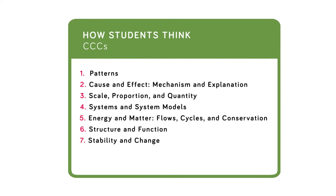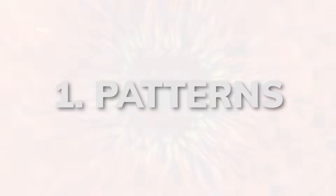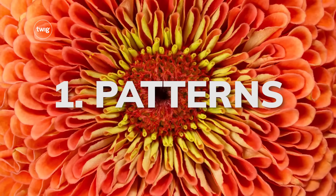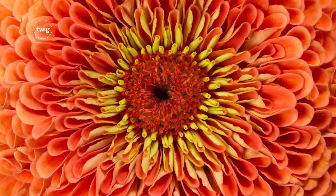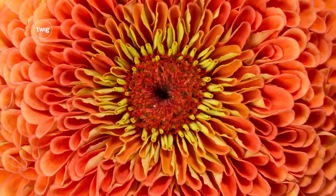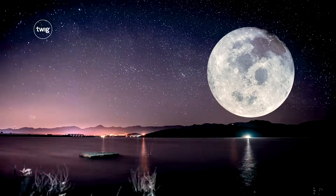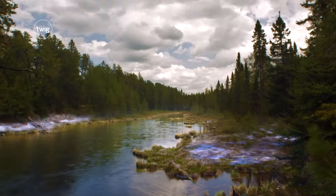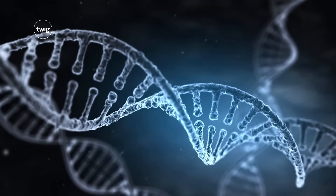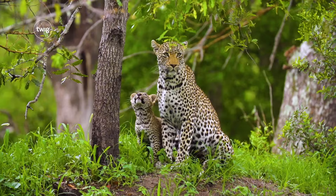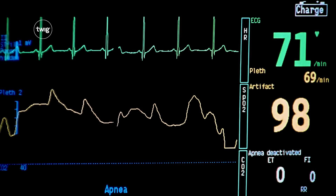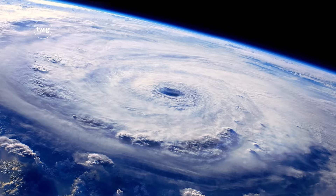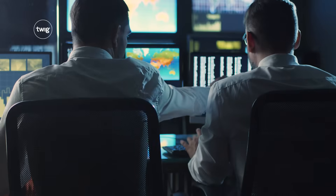Seven CCCs are defined in 3D science standards. Patterns appear again and again in nature and science, such as the symmetry of flowers, the lunar cycle, the seasons, and the structure of DNA. Recognizing patterns is important for many scientific tasks, like classification or analyzing and interpreting data.